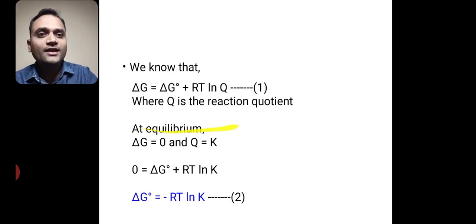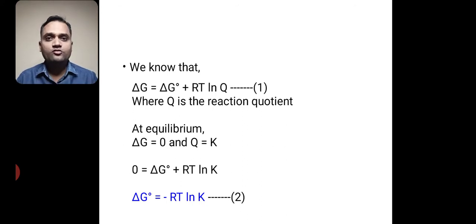We are considering here at equilibrium, so delta G is equal to 0. And at equilibrium also, Q is equal to 1. If we put these values in equation 1, then it becomes 0 is equal to delta G0 plus RT ln of K.